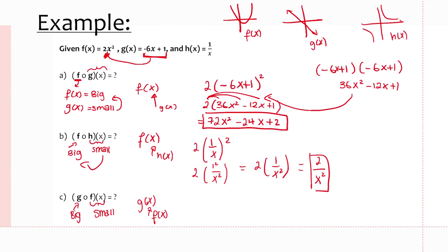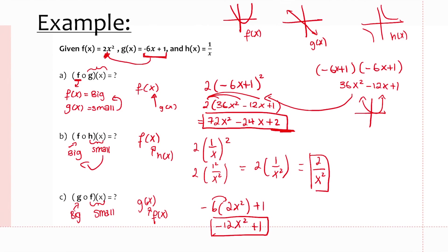For g(f(x)): f(x) equals 2x squared is the small function, and g(x) is the big function. I substitute 2x squared in for x in g, expand, and get negative 12x squared plus 1. Comparing each composition's graph: each combined function produces a completely different-looking graph from the original f(x) and g(x). Combining g with h of x, h with f of x, and g with f of x each create distinct new functions — that's the power of function composition.